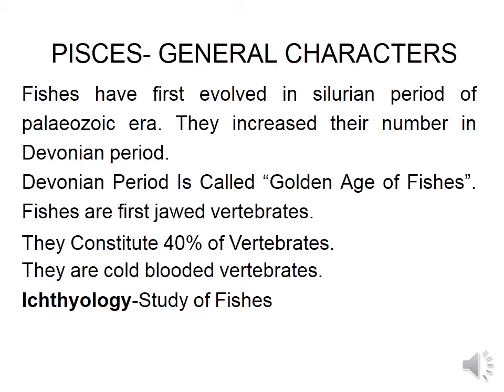This is general characters. Fishes have first evolved in the Silurian period of the Paleozoic era. They increased their number in the Devonian period, and this Devonian period is called the golden age of fishes.